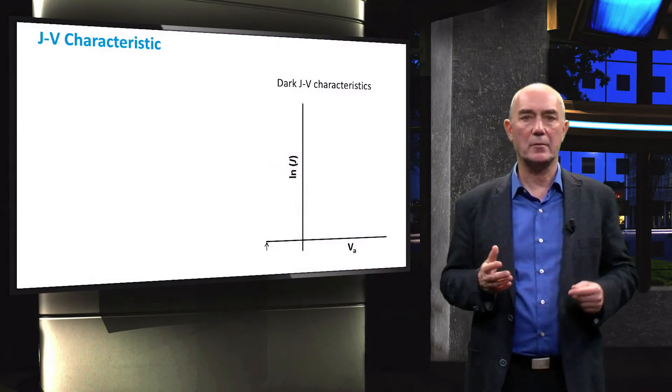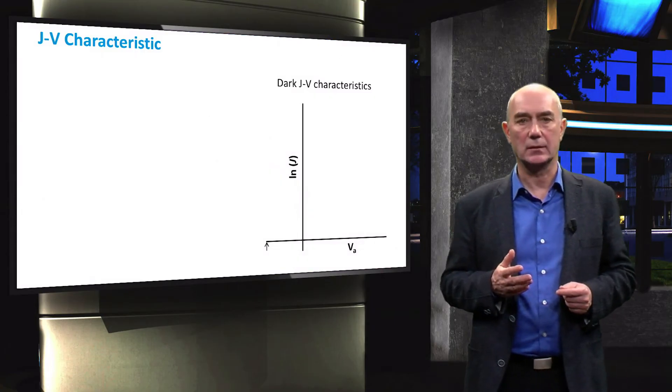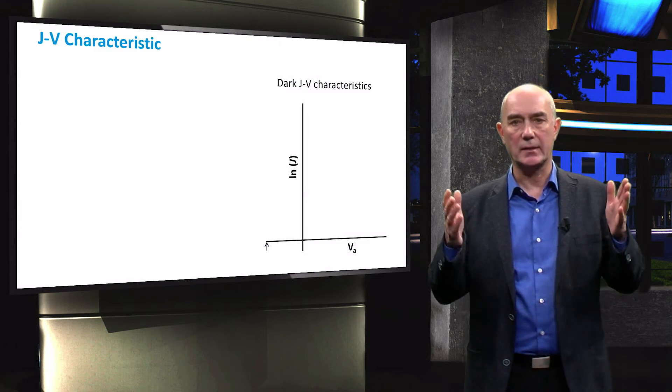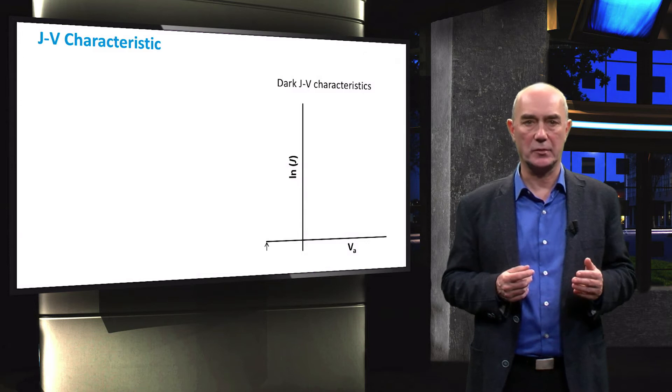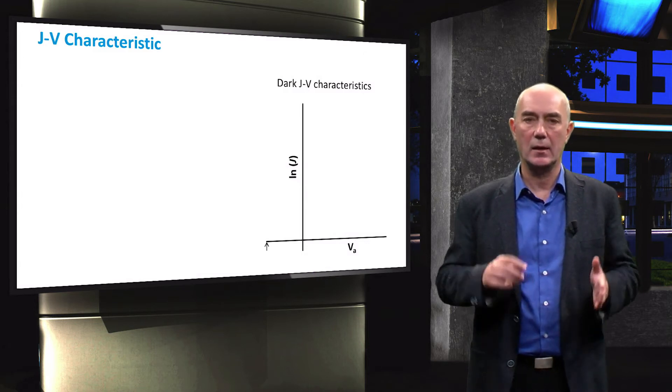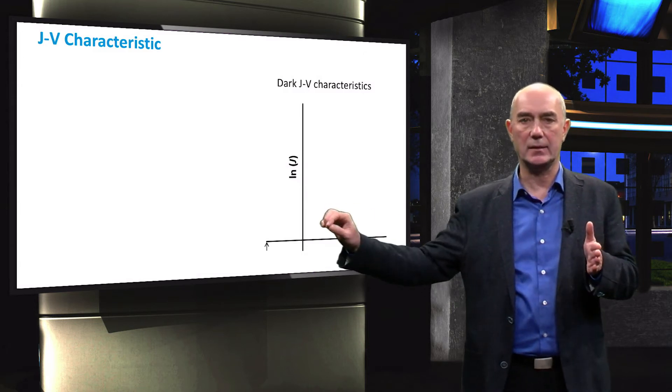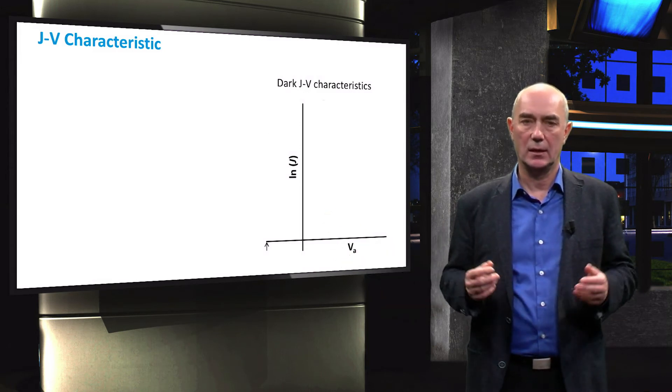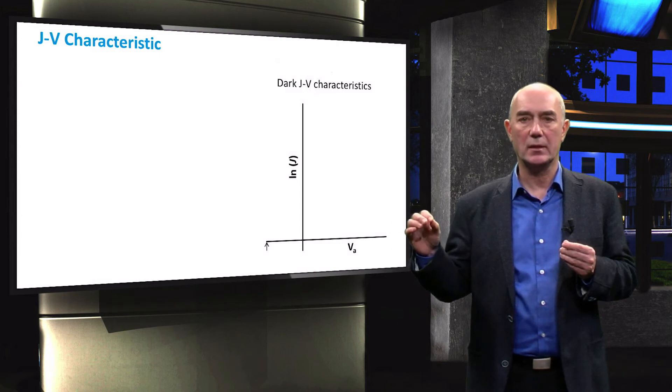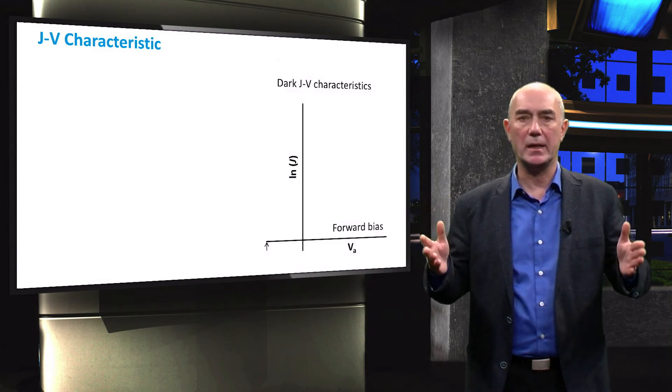So here is our axis ready for plotting. This is a semi-logarithmic plot where the Y axis shows the current density on a logarithmic scale, while the X axis shows the applied voltage on a linear scale. On the right side of the plot we have the forward bias region.